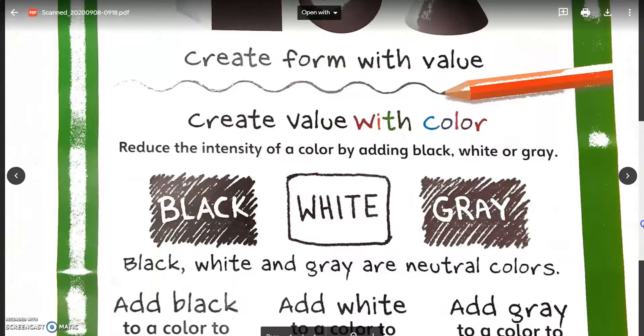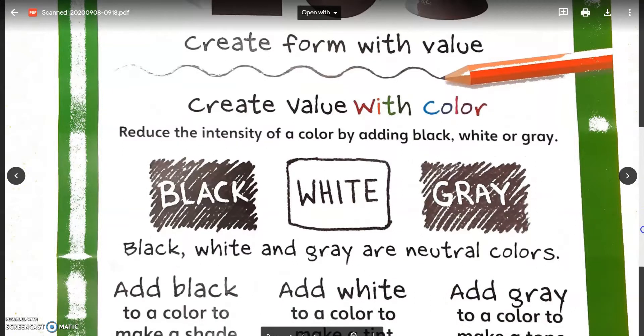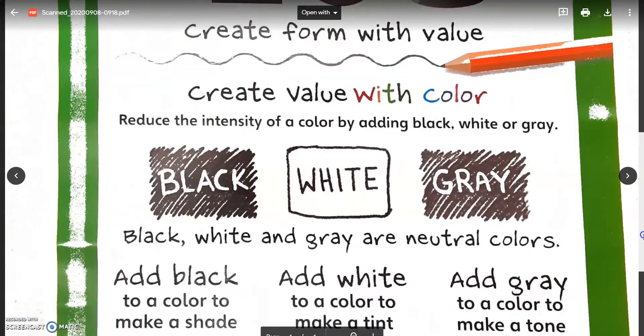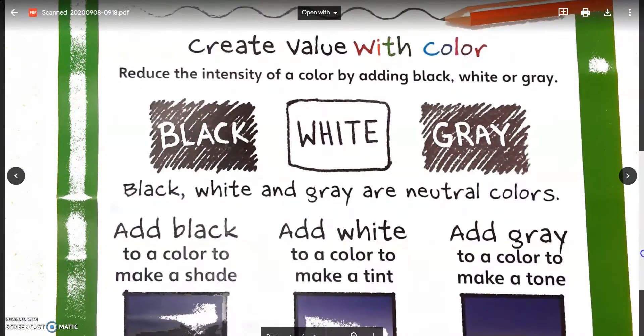You can create value with color. To reduce the intensity of a color, you add black, white, or gray. Black, white, and gray are called neutral colors.